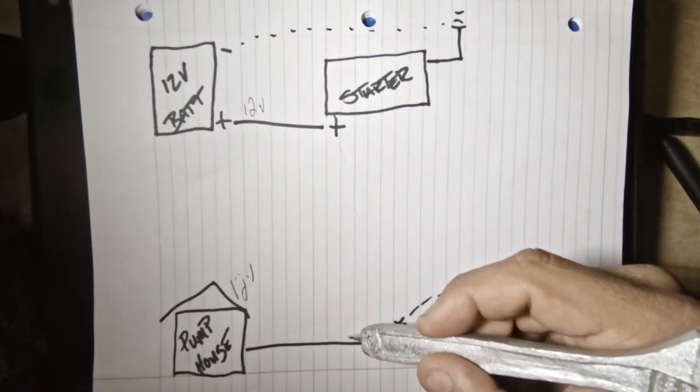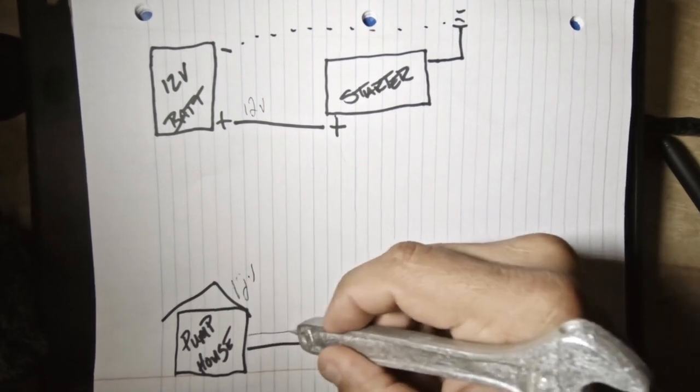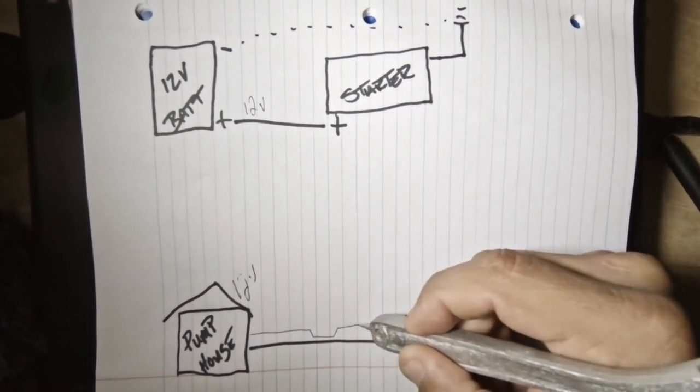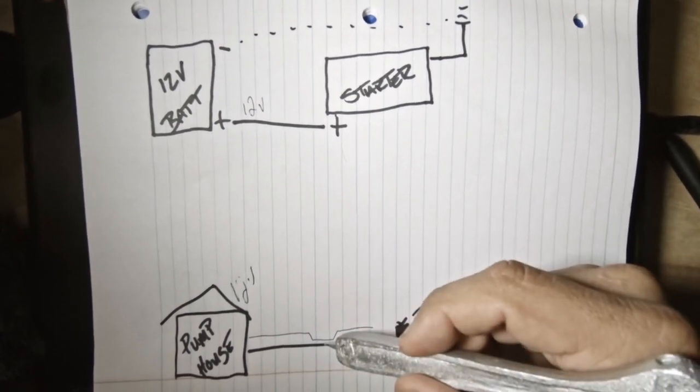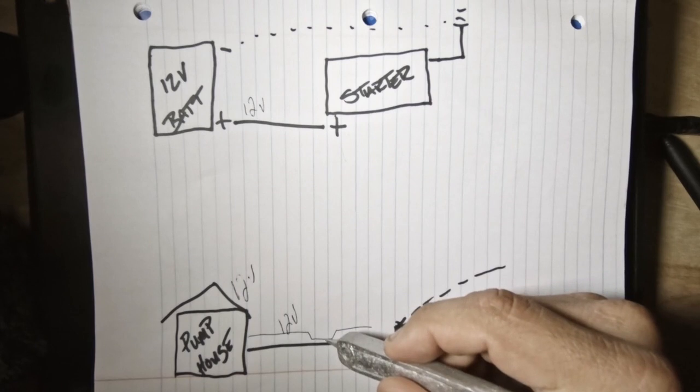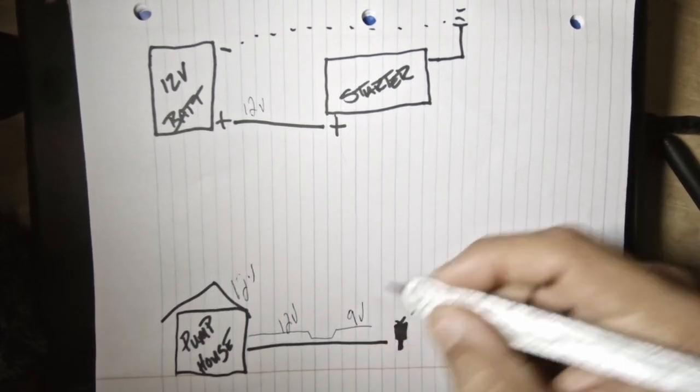Now coming back down here, what happens if we were to put let's say a reducer there, right, we're restricting flow. So on this side we see 12 volts, right after our reducer we would see 9 volts.